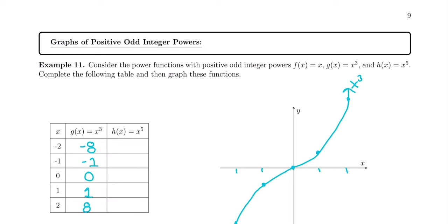And we want to compare that to what happens with x to the 5th. So x to the 5th, I'm going to plug in each of these x values. Negative 2 to the 5th is negative 32. Negative 1 to the 5th is negative 1. 0 to the 5th is 0, 1 to the 5th is 1, and 2 to the 5th is 32.